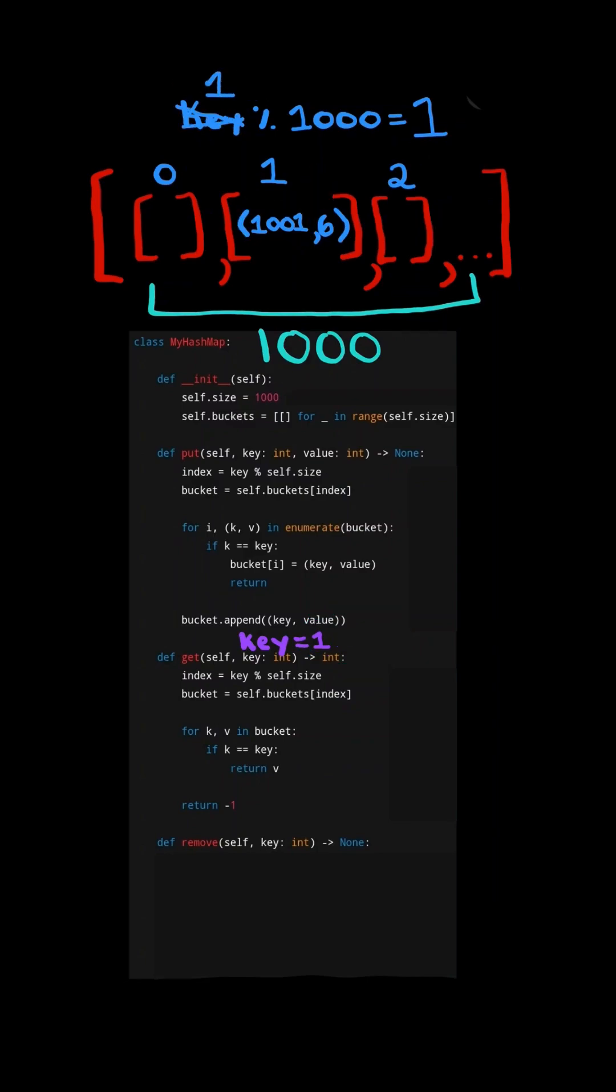Now let's assume the key was 1. It still belongs to bucket 1, but when we iterate through the bucket, we cannot find a key 1. If this is the case, then we return negative 1.